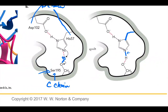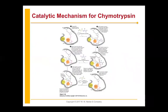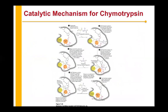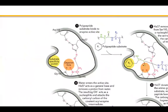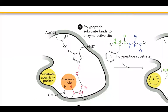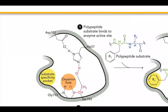Looking at our reaction mechanism in detail, what we're going to see in this overall mechanism is that we're going to make two different intermediates. So we'll track what happens: the first thing is that our polypeptide is going to bind to the enzyme active site.